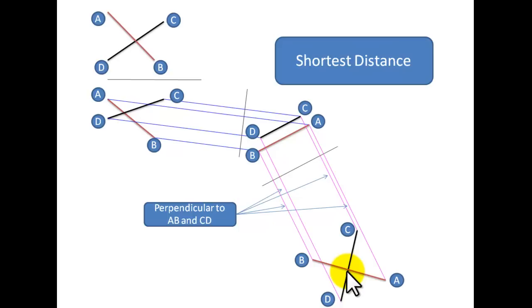So we're going to bring this point back up to our auxiliary elevation. You see that it hits the AB line here and hits the CD line here, so that is the shortest distance in our auxiliary elevation.